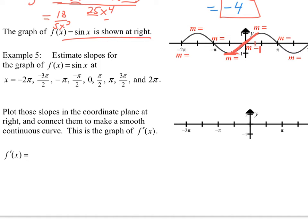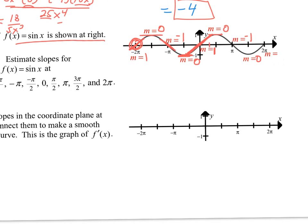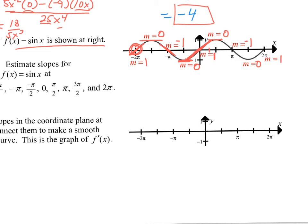Starting over at negative 2π, the slope of the tangent would be 1. At negative 3π/2, the slope would be 0. Going down: slope is negative 1. Then: slope is 0, slope is negative 1, and then slope is 0. At this last point the slope would be 1 — it is an endpoint, but we know the sine graph continues so the slope would be 1.